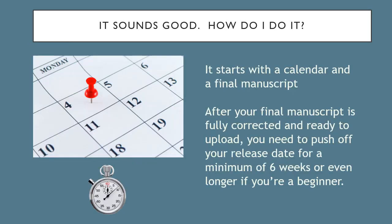It all sounds good, but how do you do it? It all starts with a calendar and a final manuscript. Using your calendar, set your true release date for eight weeks out for a beginner, or six weeks out if you've done this before. Why so long? You need to give yourself time to recruit the readers, and you need to give the readers at least two weeks to finish the book.